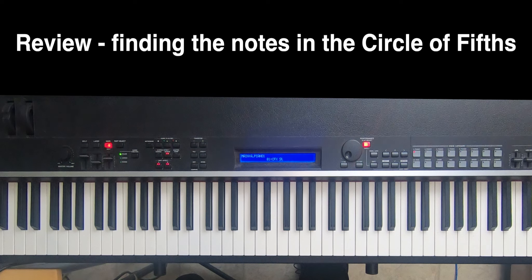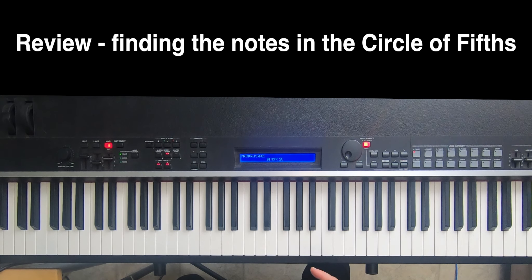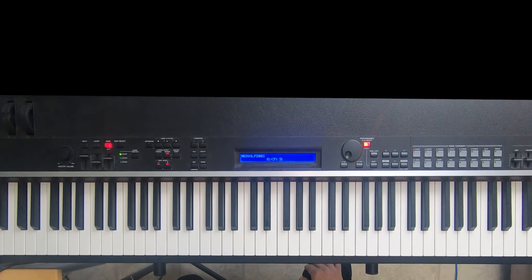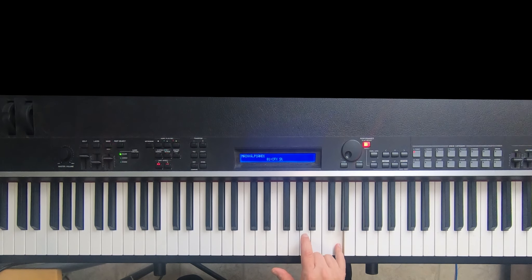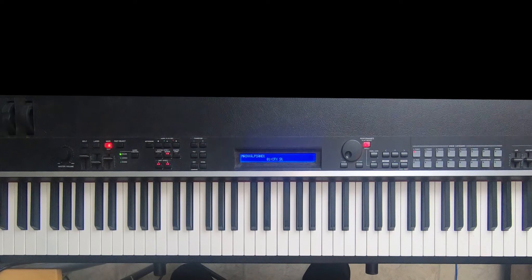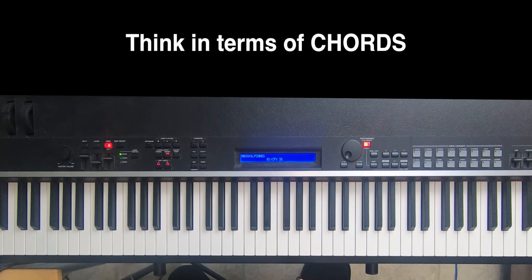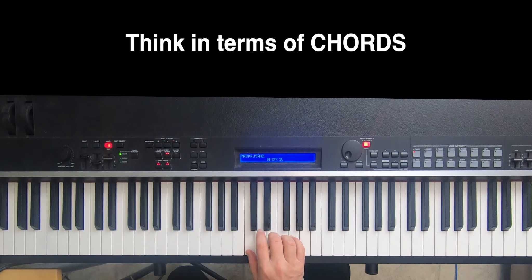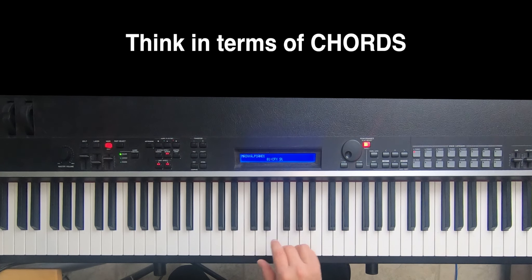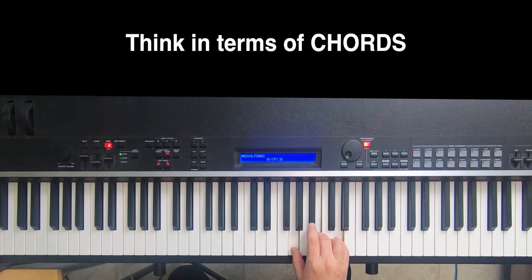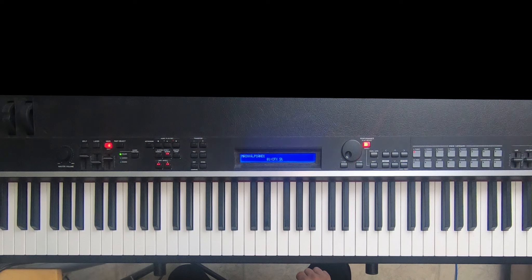So what we're going to be doing here is showing you another way to find the notes in the circle of fifths. And what you want to do at this point is think of the notes not just in terms of a single note like C, G and D and so on, but thinking of them in terms of being chords with each note representing the root of that chord. So C would represent C major, G would represent G major and so on. So this is another way that you can find the notes and the chords that are part of the circle of fifths.